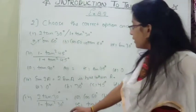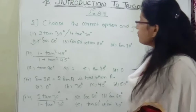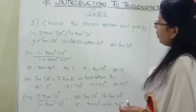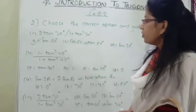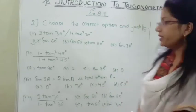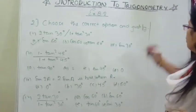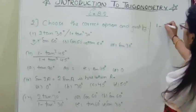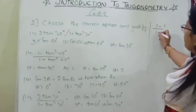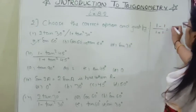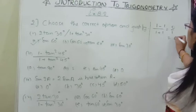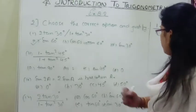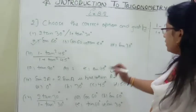Second part: we are asked 1 minus tan² 45° divided by 1 plus tan² 45°. Tan 45° value is 1, so the numerator is 1 minus 1 = 0, and the denominator is 1 plus 1 = 2. So 0 upon 2 equals 0. We got 0 as the answer.